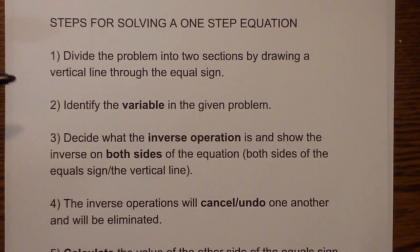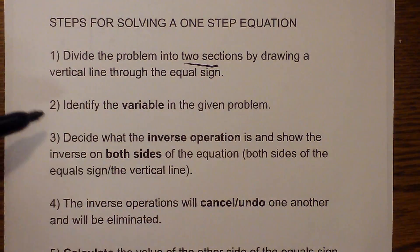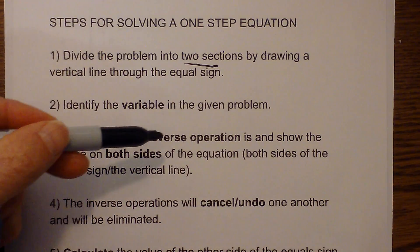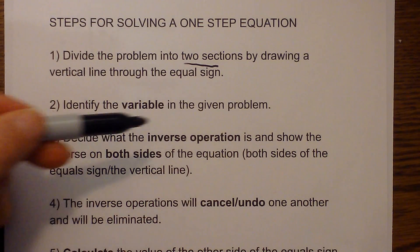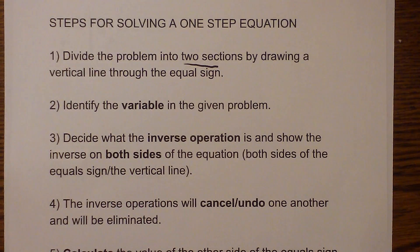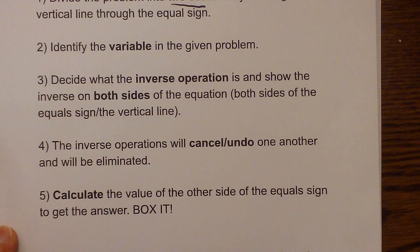First, it helps if you divide the problem into two sections. Next, identify the variable, then decide what the inverse operation is. The inverse operation will cancel or undo, and then you will calculate the value and box it.